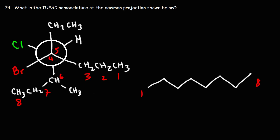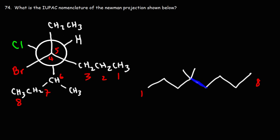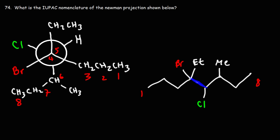We have an 8-carbon chain. Let's call the first carbon 'carbon one' and the last 'carbon eight.' The Newman projection is between carbons four and five — that's the bond of rotation we're viewing. On carbon four we have an ethyl group and a bromine atom. On carbon five (behind carbon four) there's a hydrogen and a chlorine atom. On carbon six there's a methyl group, then seven and eight. So we have four substituents: methyl, ethyl, chlorine, and bromine.